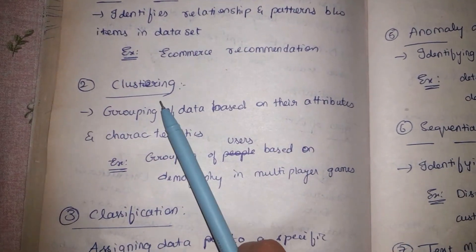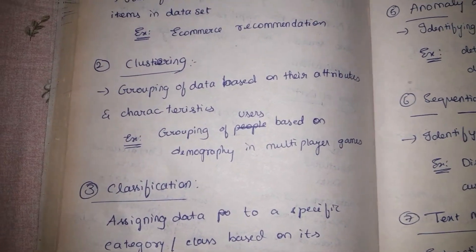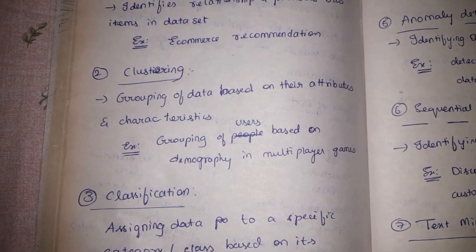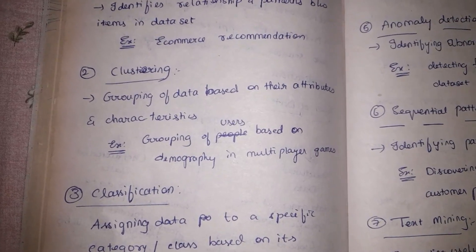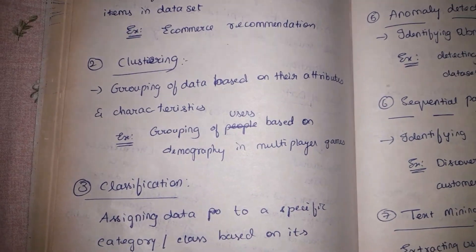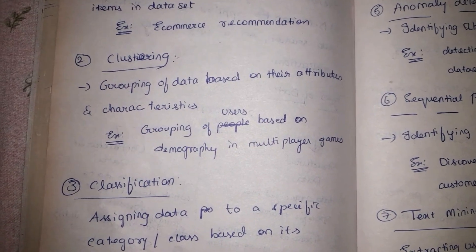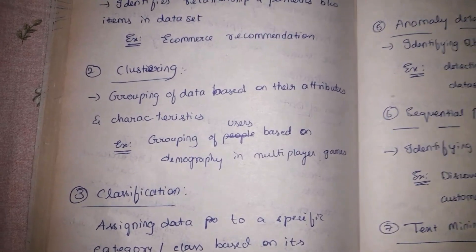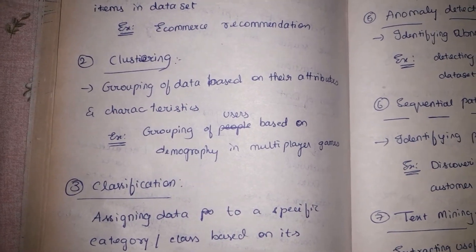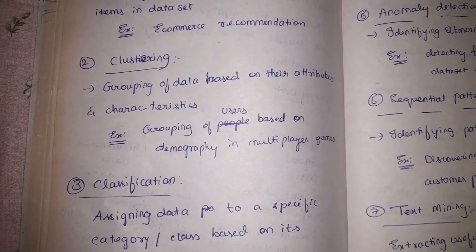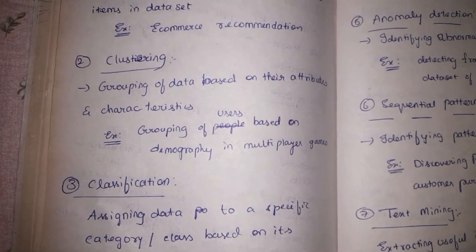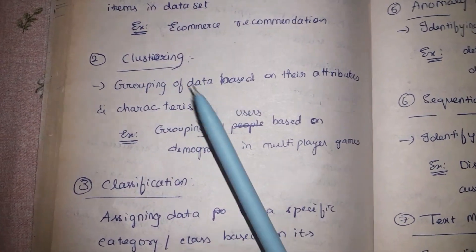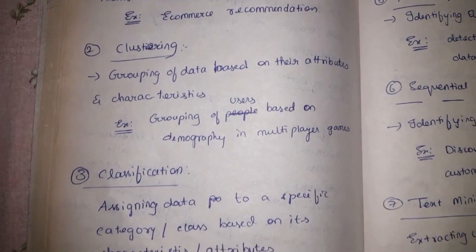The second data mining functionality is clustering. Clustering simply means grouping of data based on certain attributes or characteristics. For example, in a multiplayer game, players are grouped into different servers — Asia, Africa, North America, Europe — based on their location. That is how clustering works.